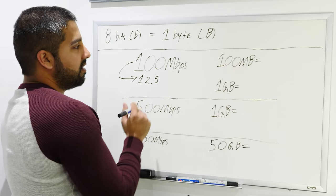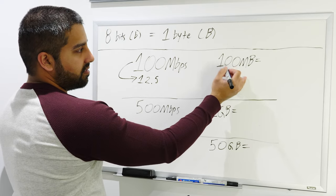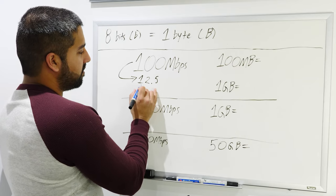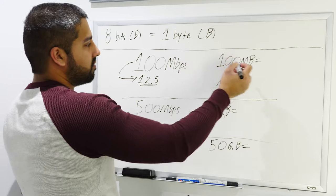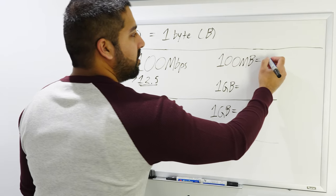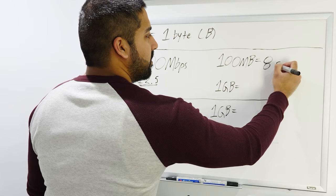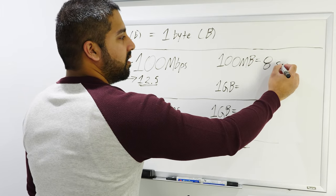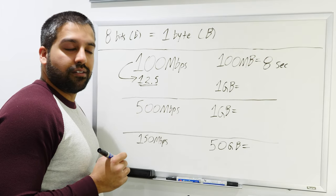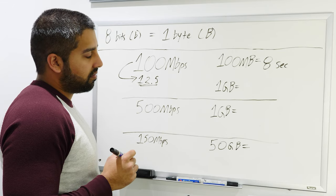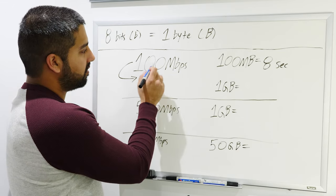So this is how many megabytes you would download within a second. Now with that information, we want to know, okay, how long would it take to download this? Well, now you divide this number, this file size, by this here. So if you have 100 megabits per second connection, it would take you eight seconds to download a 100 megabyte file.